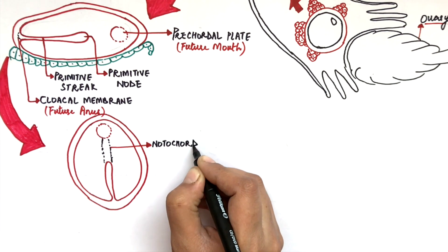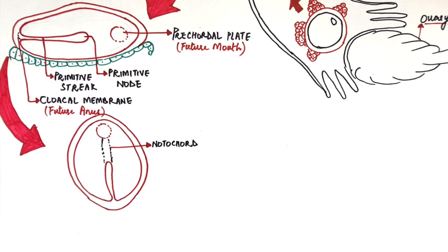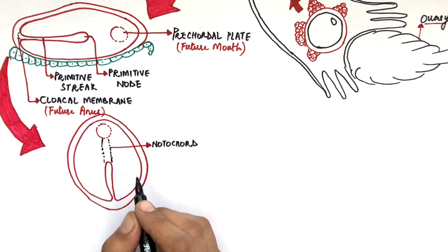The notochord lies in between the epiblast and the hypoblast, and will eventually become the nucleus pulposus of the intervertebral disc.